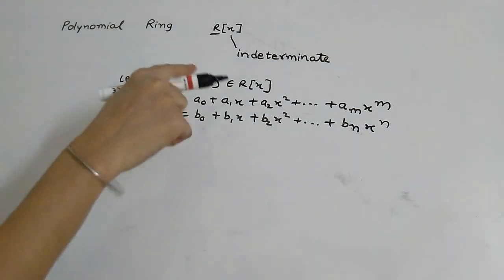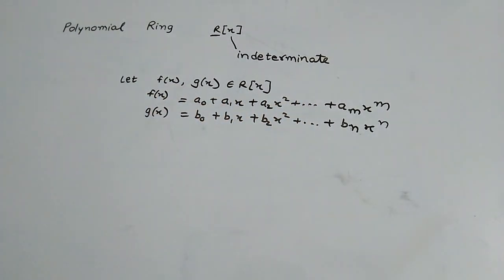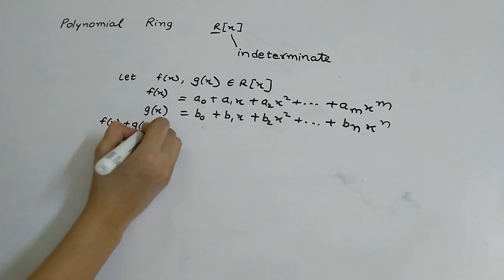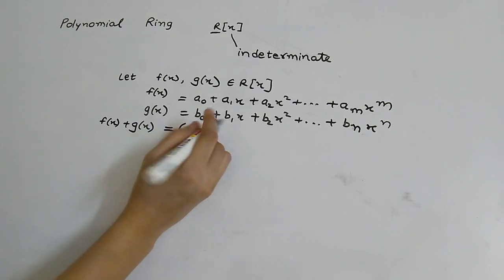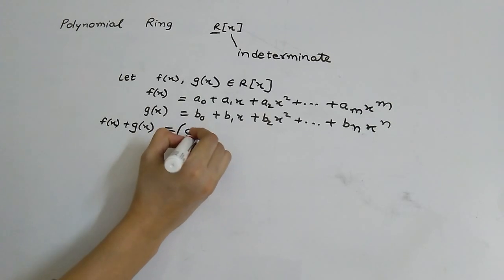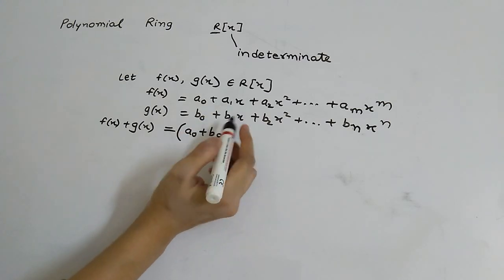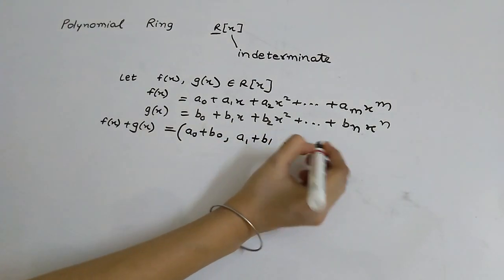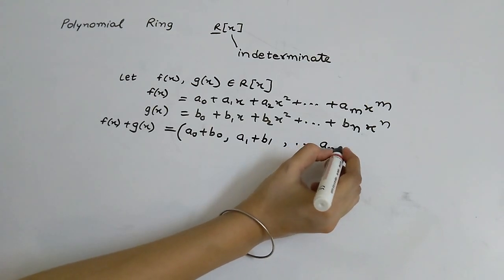Now let's perform addition and multiplication over these two elements which belong to R[x]. For addition, f(x) + g(x) equals: the constant terms (a0 + b0), then the x-coefficient (a1 + b1), and so on up to the highest term (am + bn).